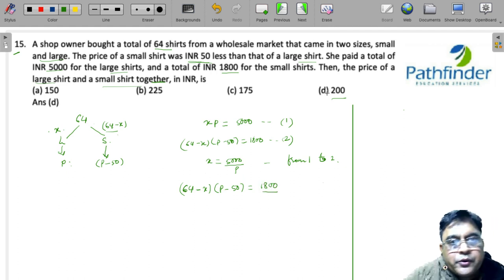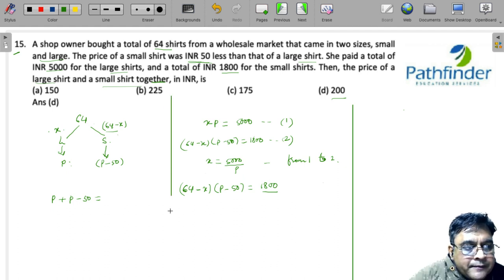Now what are these options giving you? These options are giving you the total price of a small shirt, so basically P plus P minus 50. This is what the options are giving you. And according to your options, the value of P plus P minus 50 can be 150, can be 225, can be 175, and can be 200.